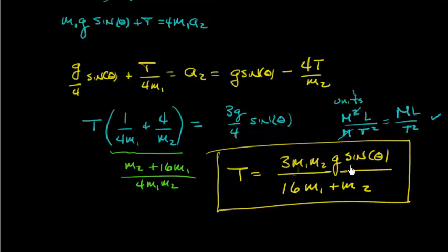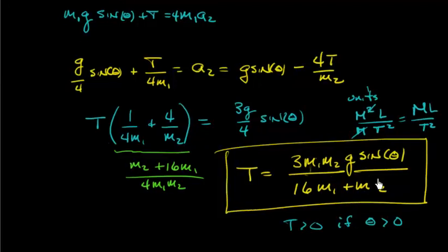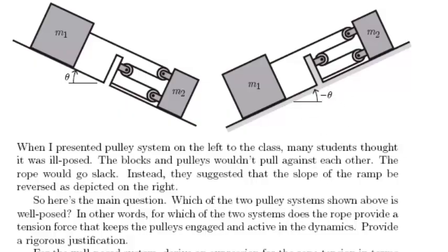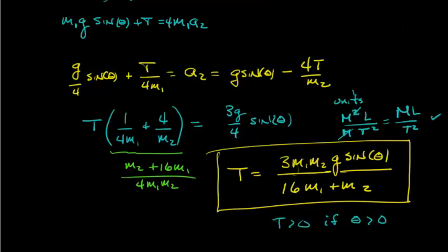Looking at the tension expression: the factor of 3 is positive, masses are always positive, g is positive, and sinθ is positive as long as theta is between 0 and 180 degrees. The denominator 16m1 + m2 is also always positive. So tension is greater than zero when theta is positive. But if theta is negative — meaning the slope goes the other way, the other configuration — then sin of a negative number is negative, making tension less than zero.